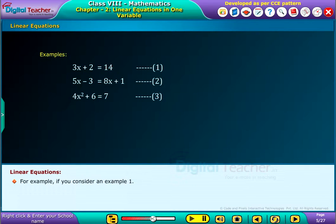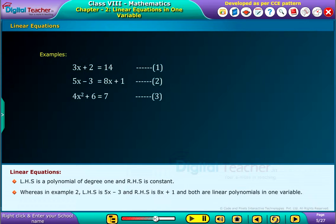For example, if you consider example 1, LHS is a polynomial of degree 1 and RHS is constant. Whereas in example 2, LHS is 5x minus 3 and RHS is 8x plus 1, and both are linear polynomials in one variable. Whereas in example 3, LHS is a polynomial of degree 2 and RHS is constant.